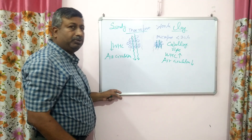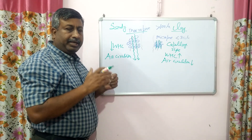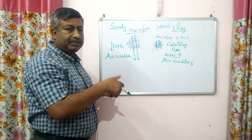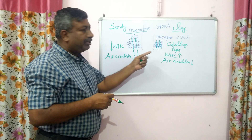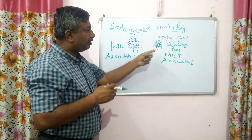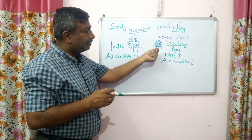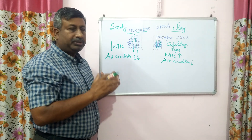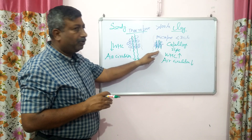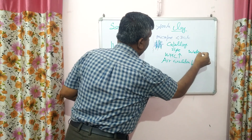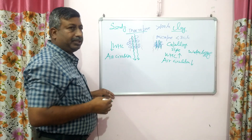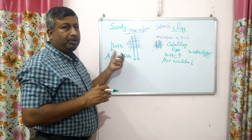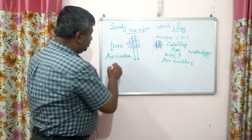For good plant growth and root growth, both water holding capacity and air must be available. In sandy soil, water holding capacity is poor due to the dominance of macropores, but air circulation is good. Moisture is not retained for a longer period and plants face moisture deficiency — moisture deficit is the problem in sandy soil.